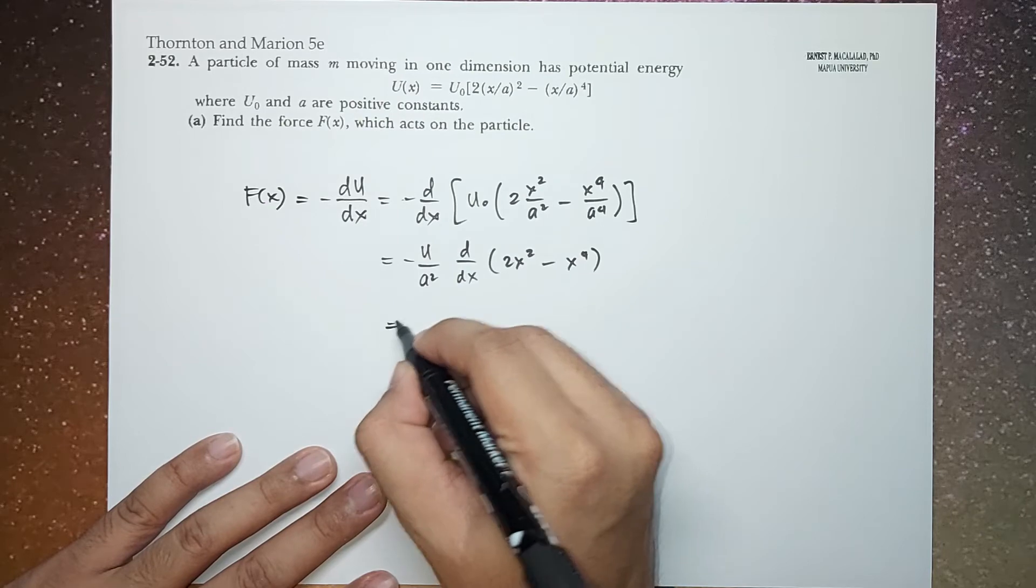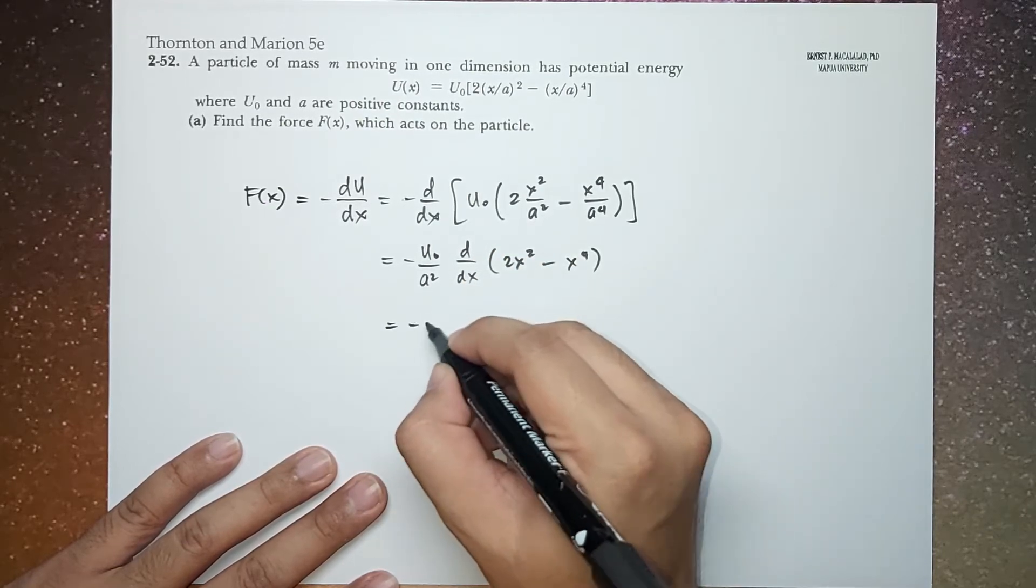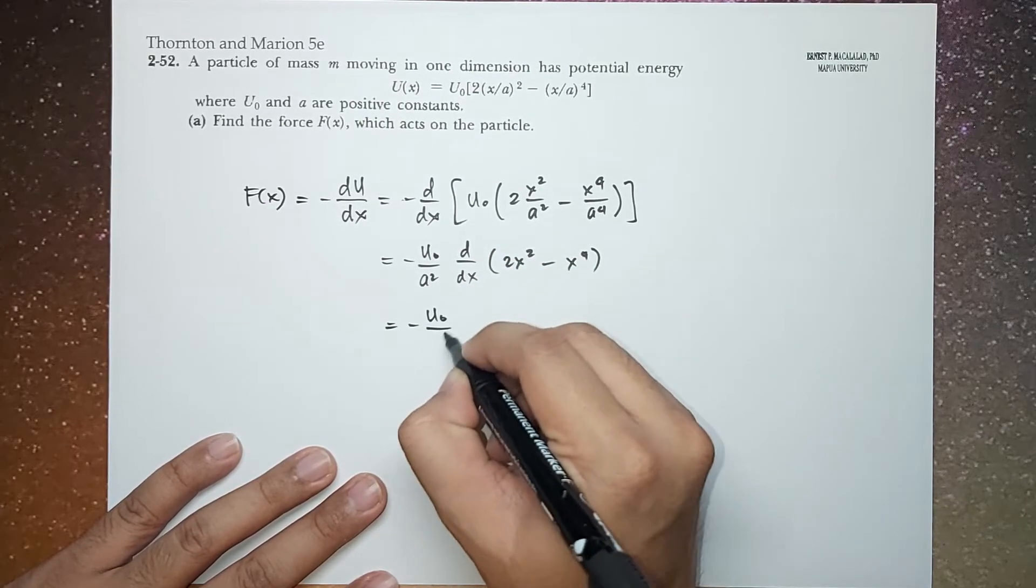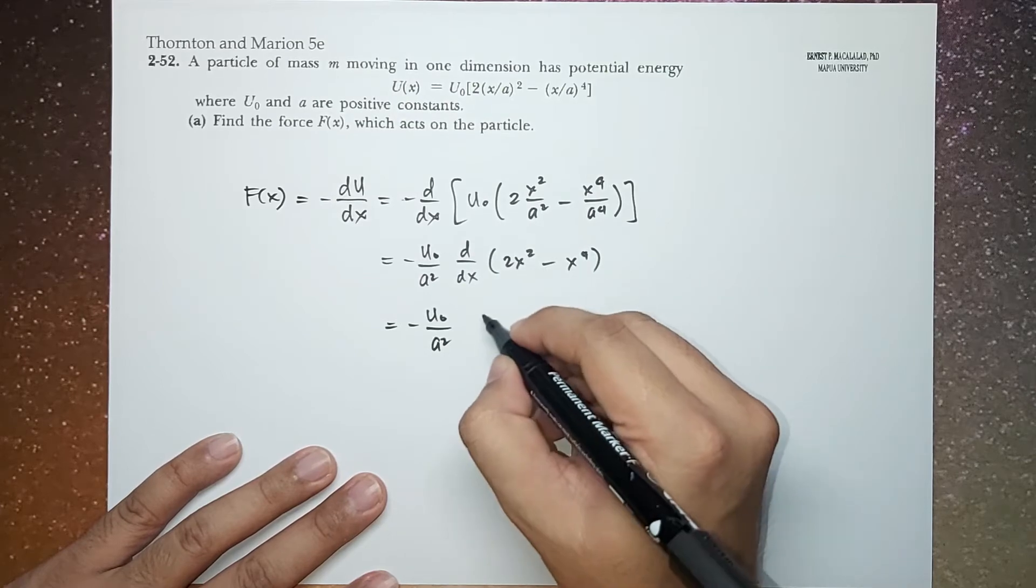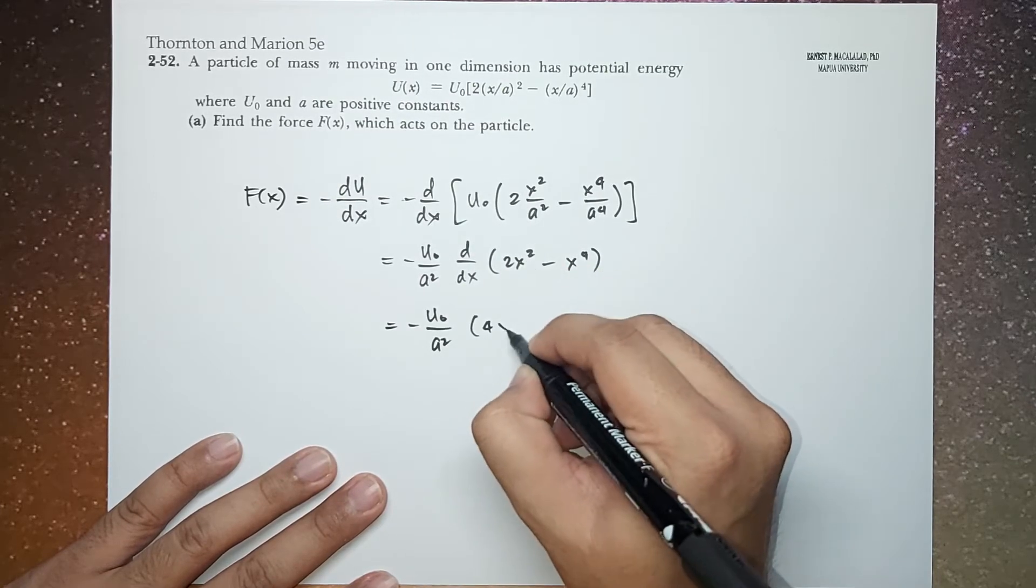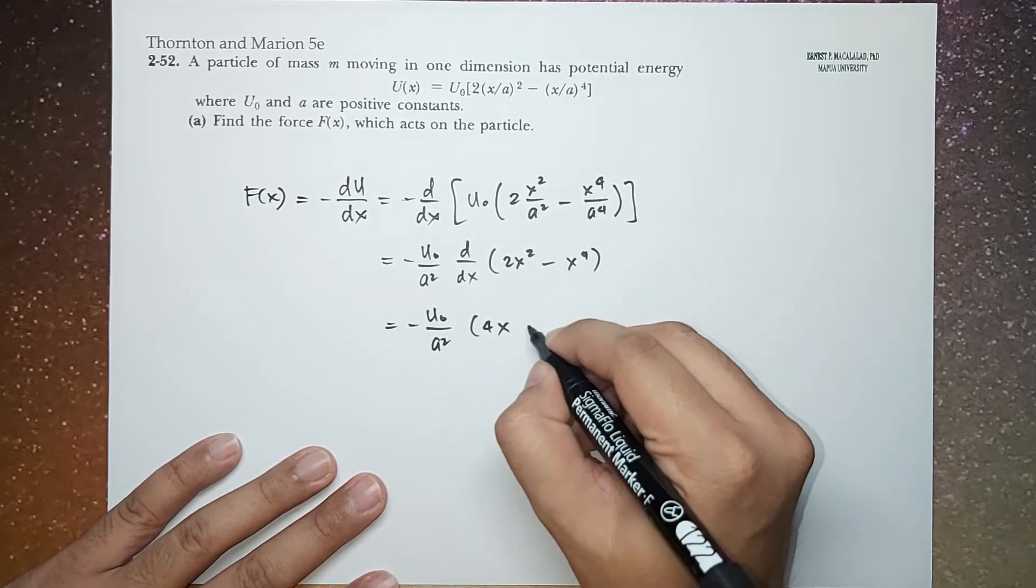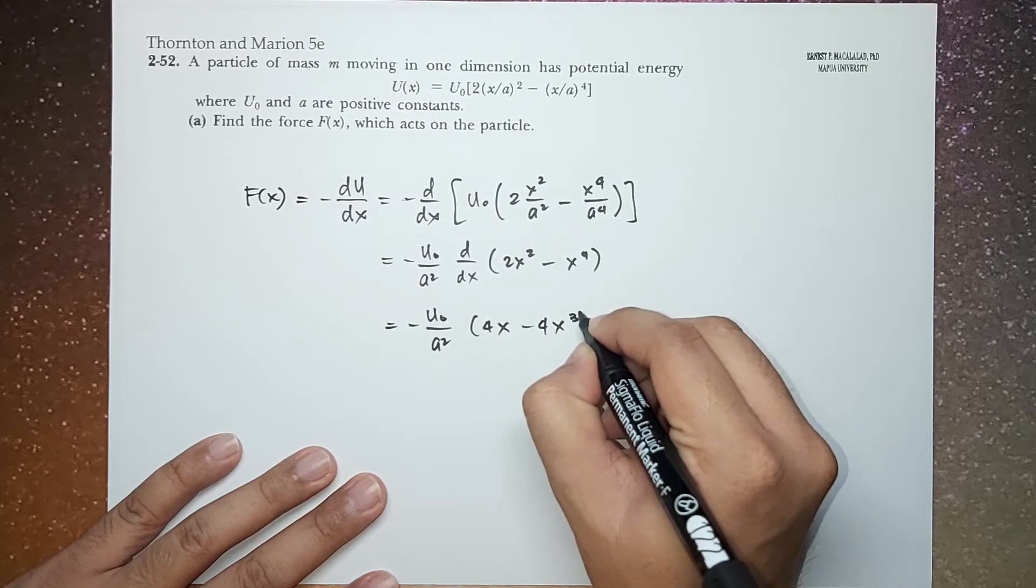So now we can easily differentiate this. So this is negative U0 over A squared times (4*X - 4*X^3).